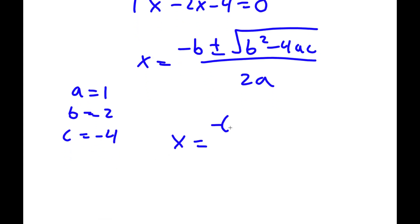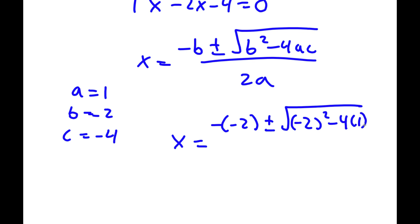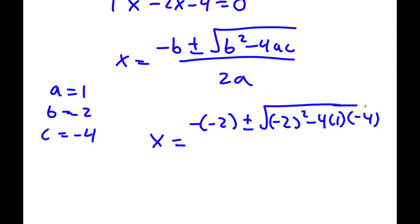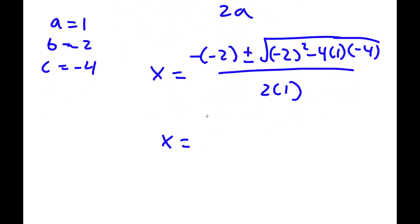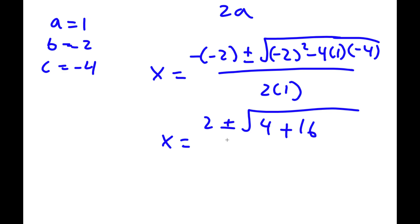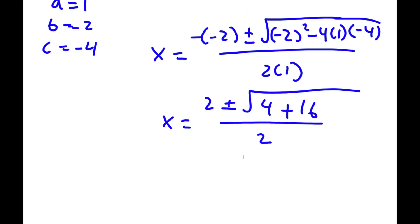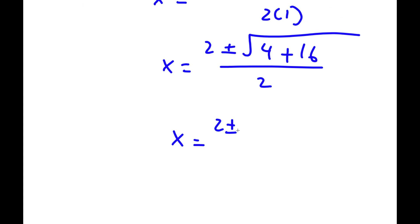So now I have x is equal to negative b — and negative of negative 2 is positive 2 — plus or minus the square root of negative 2 squared minus 4 times 1 times negative 4, all over 2 times 1. So I have positive 2 plus or minus the square root of 4 minus 4 times negative 4, which is positive 16, over 2. So now x equals 2 plus or minus the square root of 4 plus 16, which is 20, over 2.